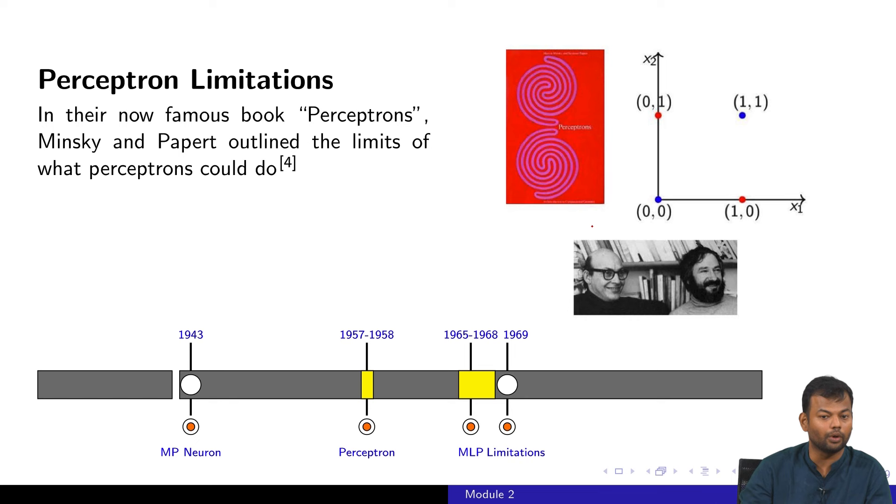Then around 1969 an interesting paper came out by these two gentlemen Minsky and Papert which essentially outlined some limitations of the perceptron model. We will talk about these limitations later in the course. What it said is that it's possible that a perceptron cannot handle some very simple functions. Even a simple function like XOR is something which a perceptron cannot be used to model. That is what this paper essentially showed.